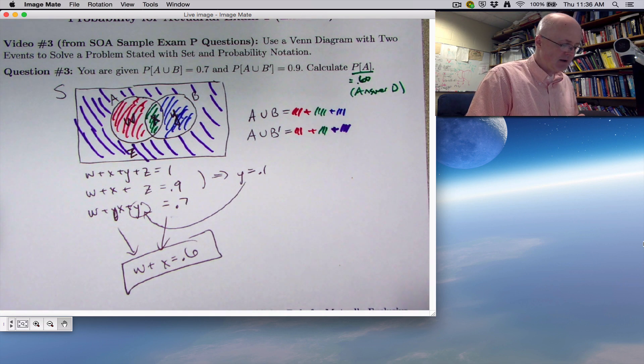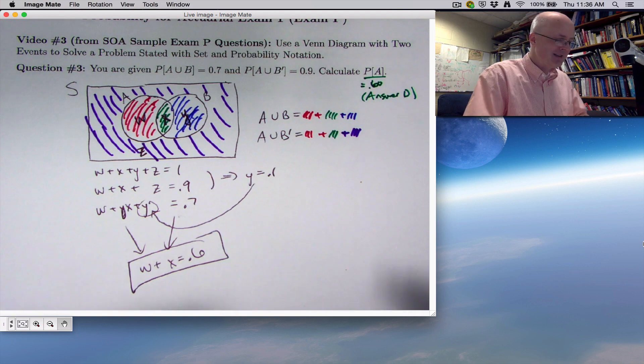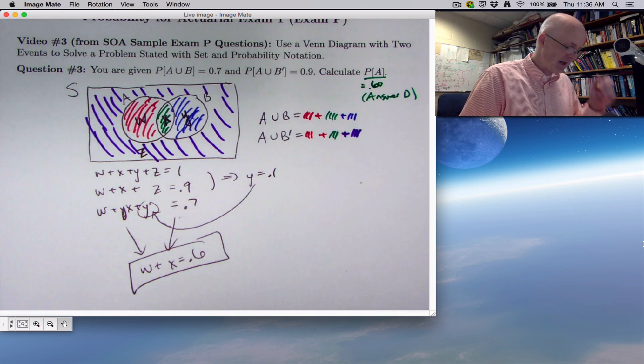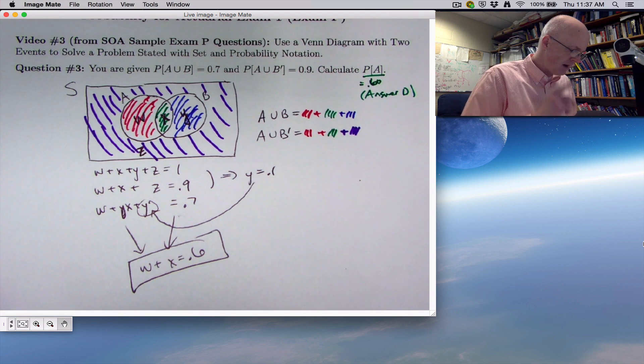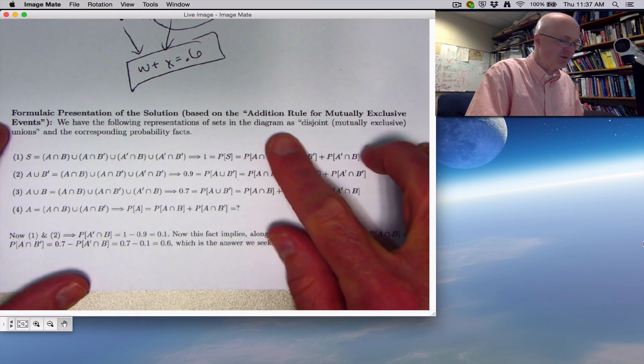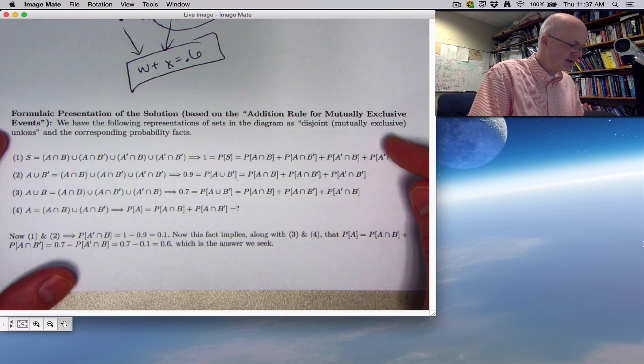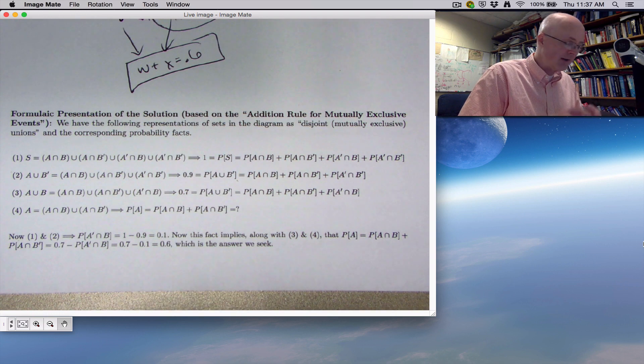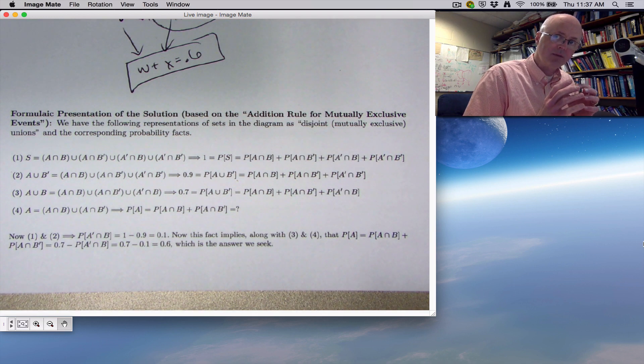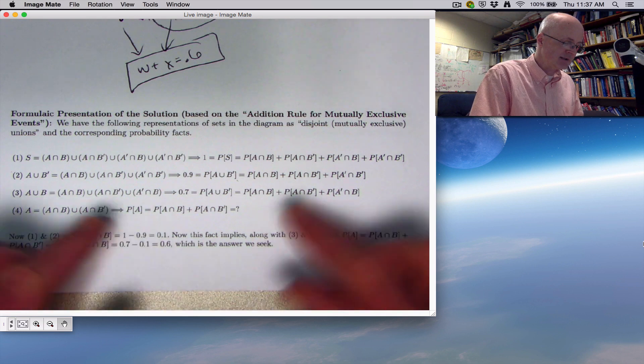So now I want to show you a couple other things. Again, I want to show you how to think about this more systematically and in a more complicated way using this kind of notation and introducing something called the addition rule for disjoint events or mutually exclusive events. And then we do the Mathematica thing. What I'm about to show you is pretty complicated. Here it is. Here's a formulaic presentation of the solution based on the addition rule for mutually exclusive events. We have the following representations of the sets that are in the diagram as disjoint or mutually exclusive unions, meaning combined sets that don't have overlap.